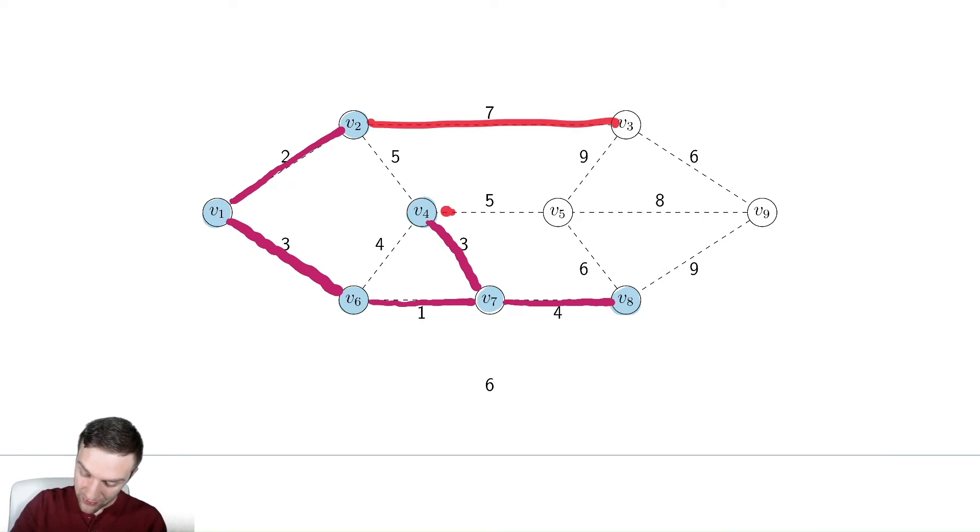Now let's check. We have seven, we have five, and we have six and nine. The winner of all of those is five. Now we still have seven, nine, eight, and nine. The winner of those is seven. So we add seven to the minimum spanning tree.